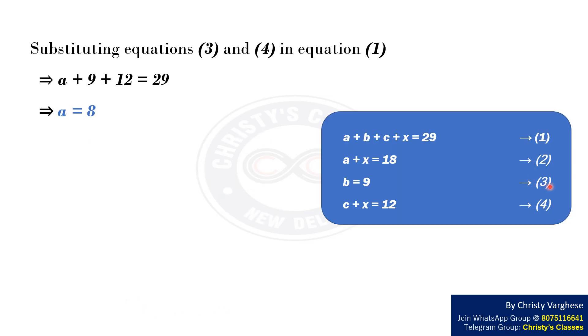Substituting equations 3 and 4 in equation 1, we get A plus 9 plus 12 equals 29. This implies that A equals 8.